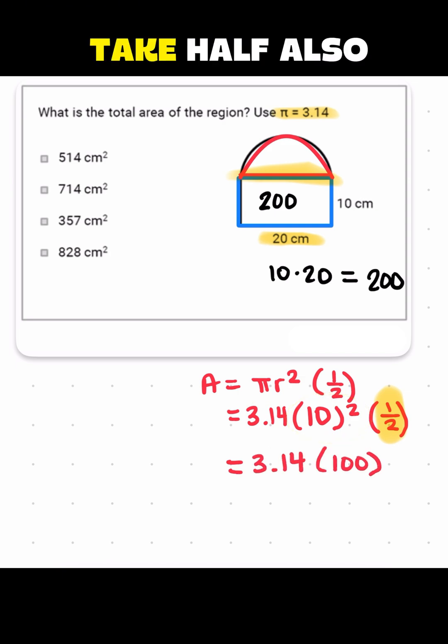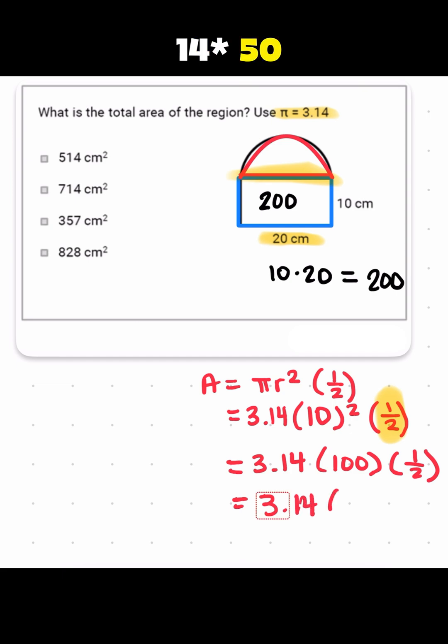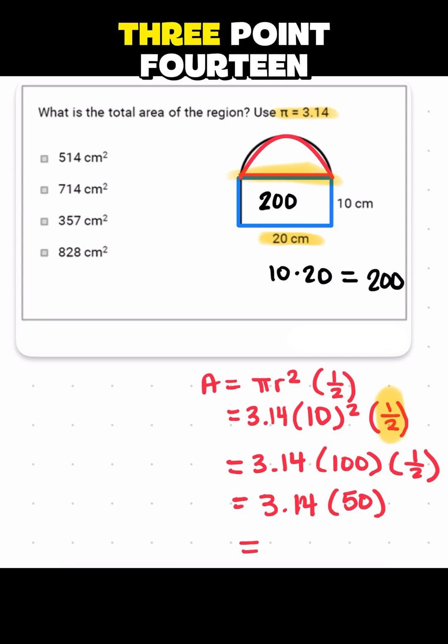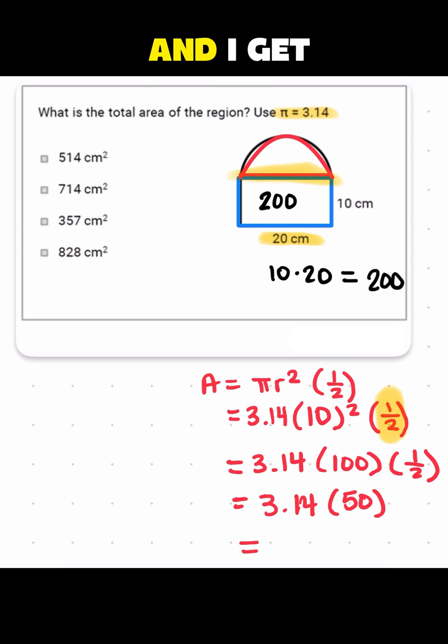And then we want to take half also. So it's going to be 3.14 times 100 times a half. So that's 3.14 times 50. You can multiply any of these first. I decided to multiply the 100 by the half first because that's just the easiest to do in my head. Let's actually go ahead and multiply this. So I'm going to multiply 50 times 3.14 with a calculator and I get 157. So now the area of the circle is 157.